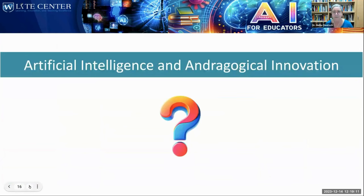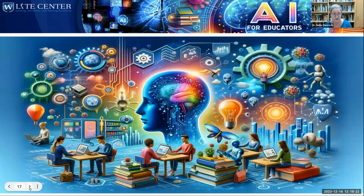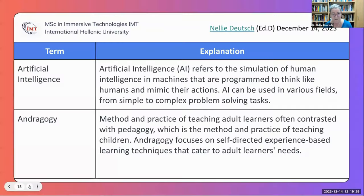So let's go into some definitions. What is artificial intelligence and andragogical innovation? There's an image created by ChatGPT 4. Artificial intelligence — just so you know, because everybody's writing artificial intelligence but actually they don't mean that. So we'll look at the differences between artificial intelligence and generative AI.